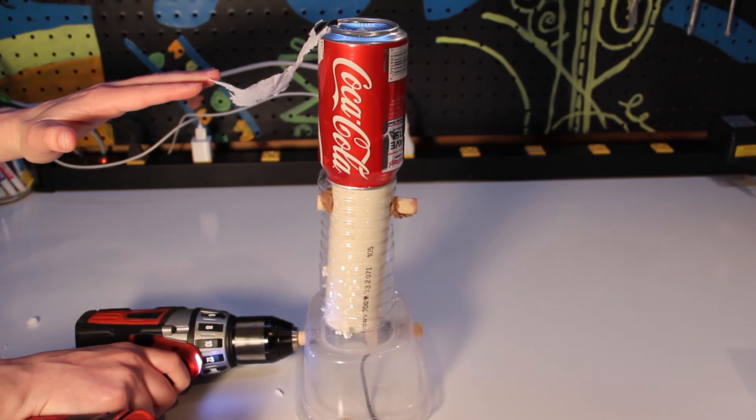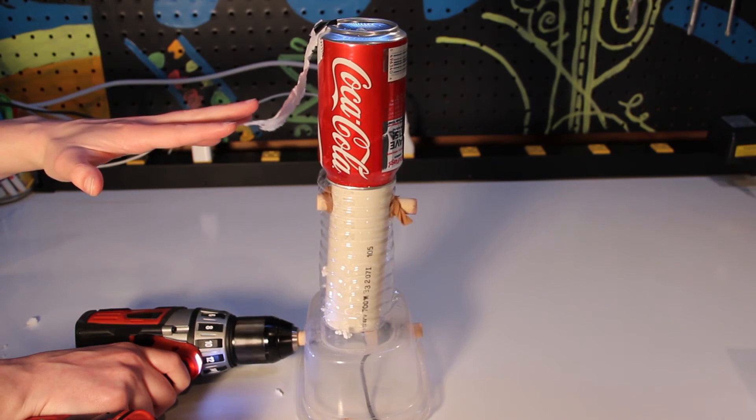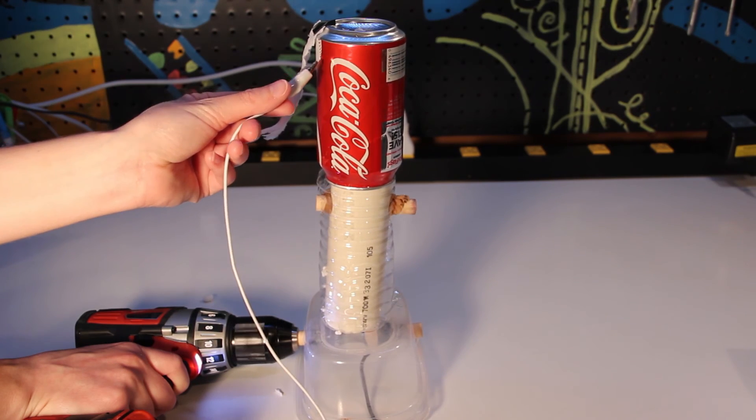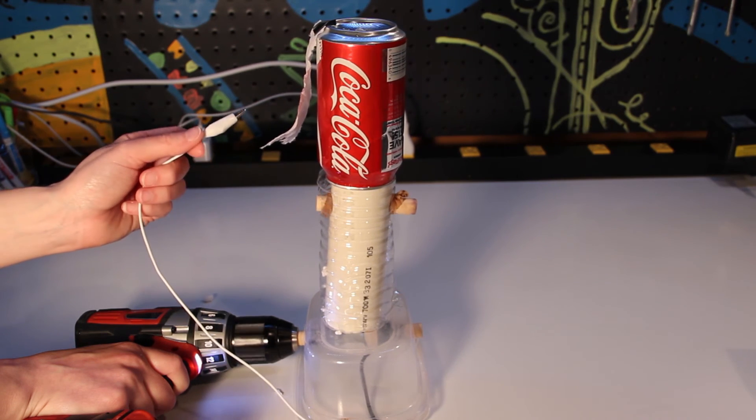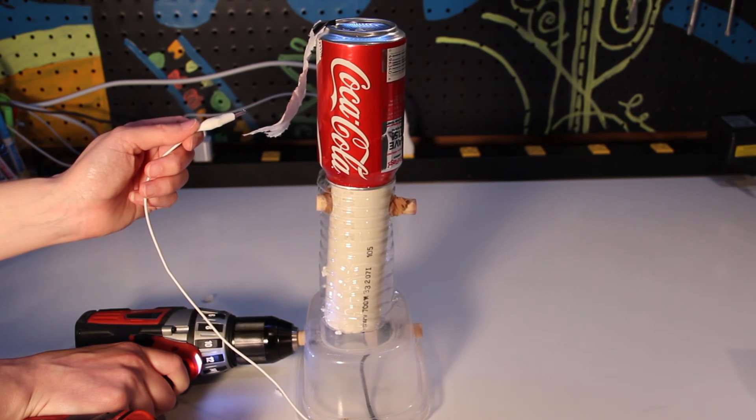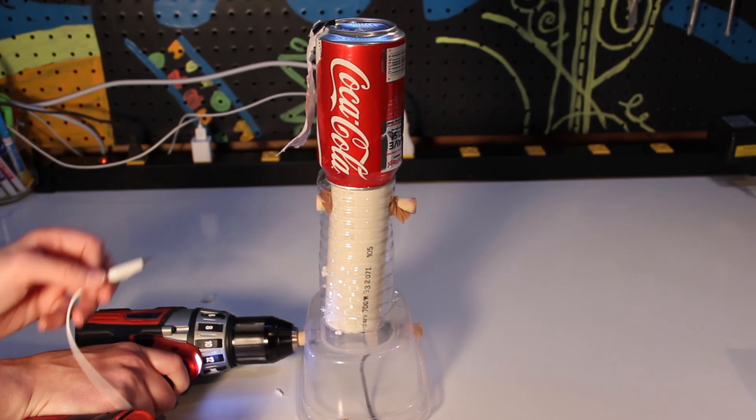Slowly turn the drill to charge the Van de Graaff generator. I use the tissue to show the charges build up, and you can see when I put my hand near the tissue they become attracted to each other. You can also use the grounded end of the lower comb as a type of wand.